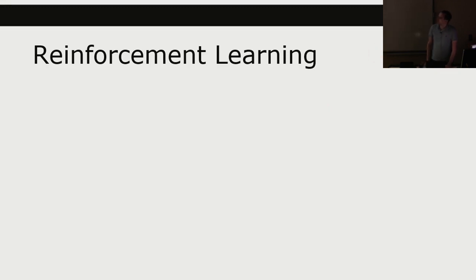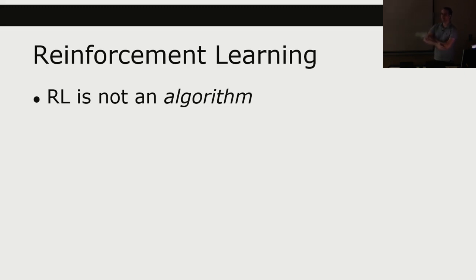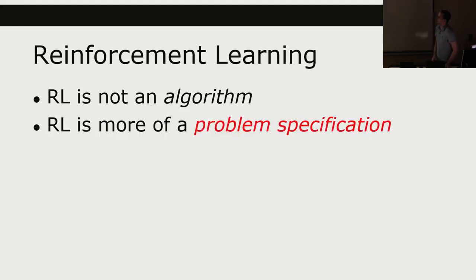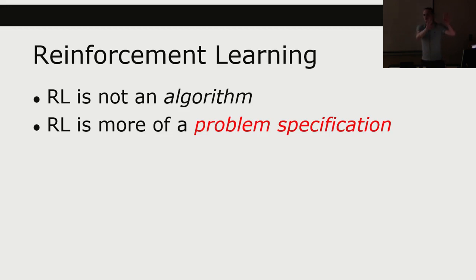Reinforcement learning is not a single algorithm like A* or BFS. It's more like search in general — a process for solving a problem. Reinforcement learning is more of a problem specification. In order to apply it, your problem has to be specified in a very specific way, just like you need to specify legal actions and performance measures to use search. Many different algorithmic techniques can be used to solve reinforcement learning problems.